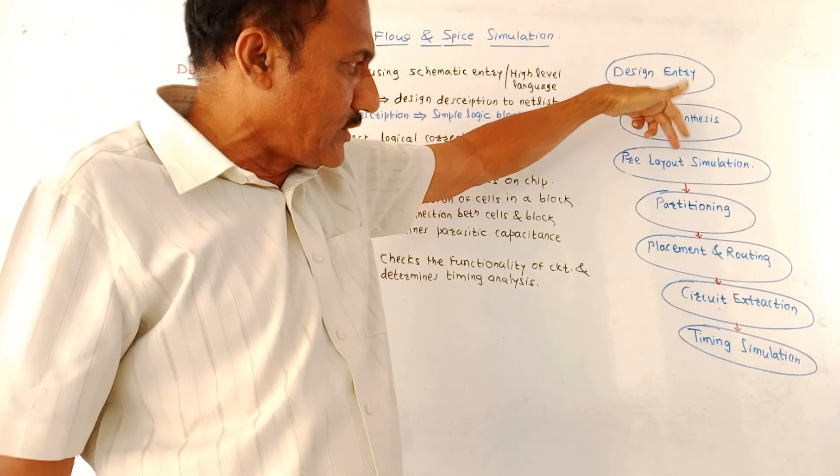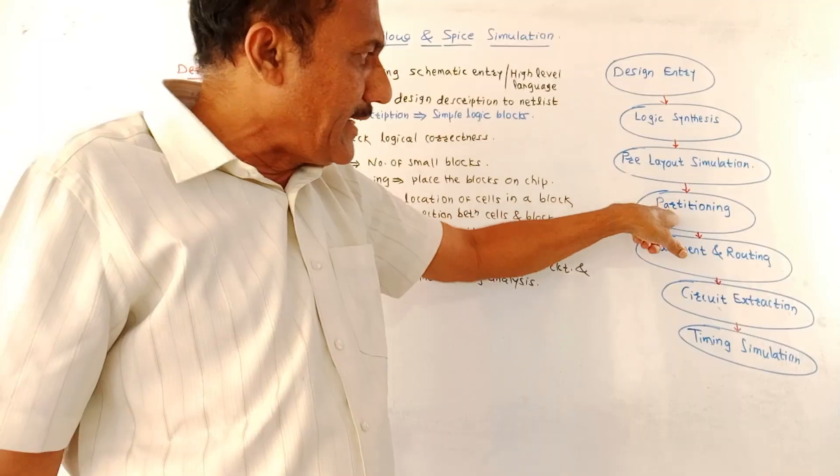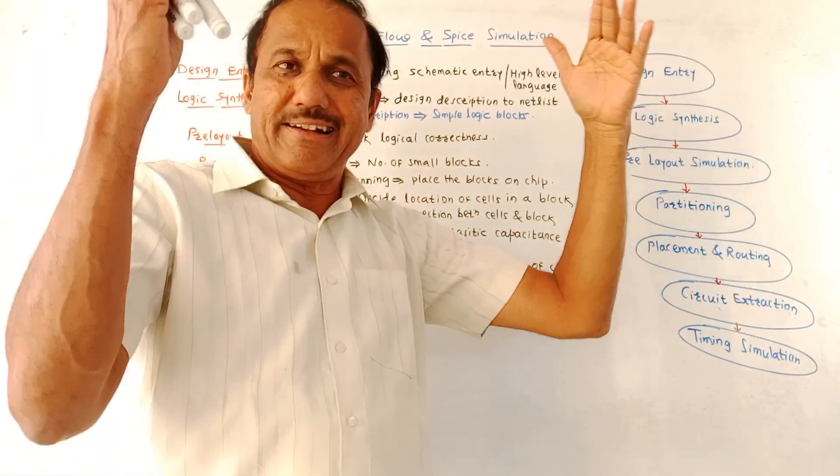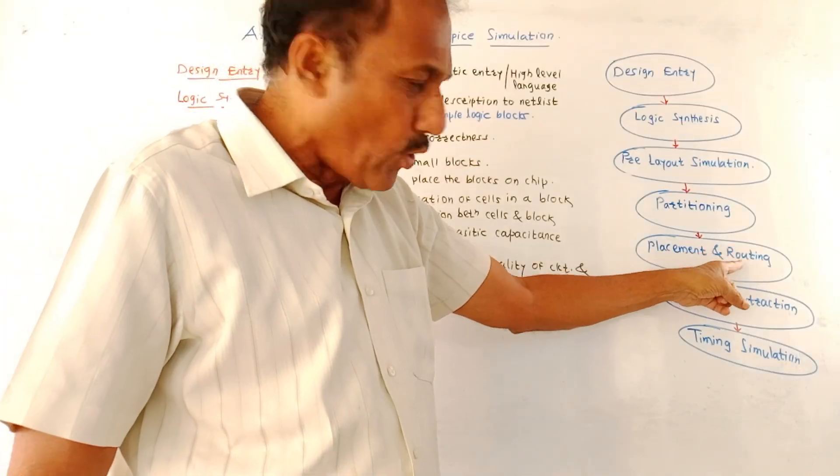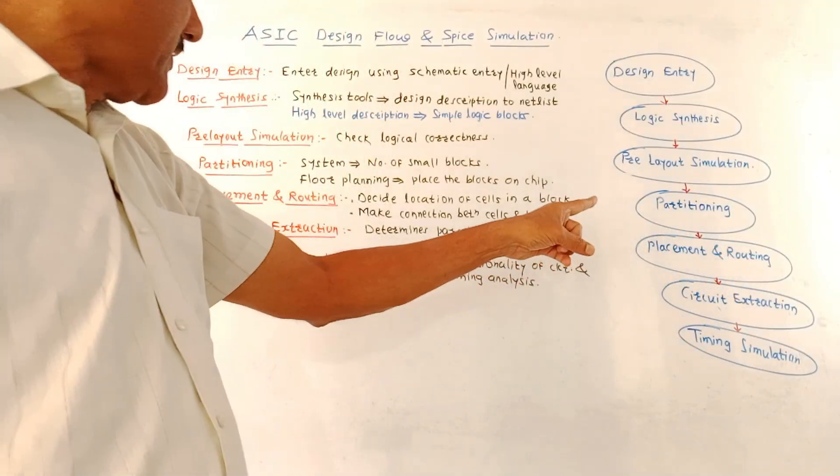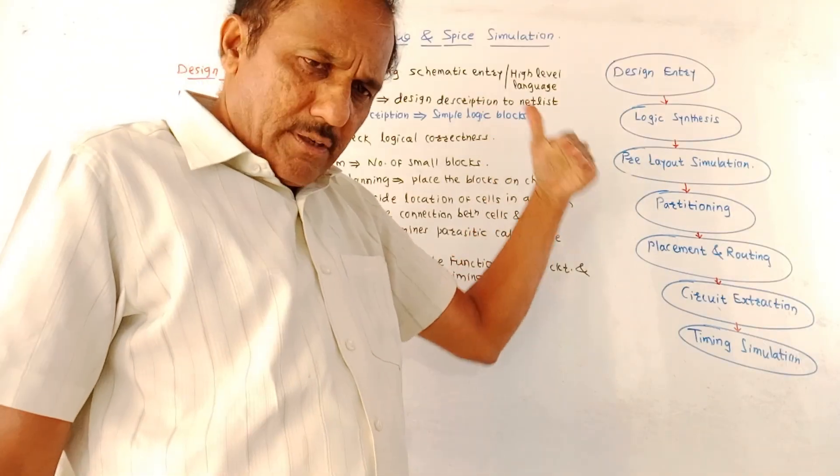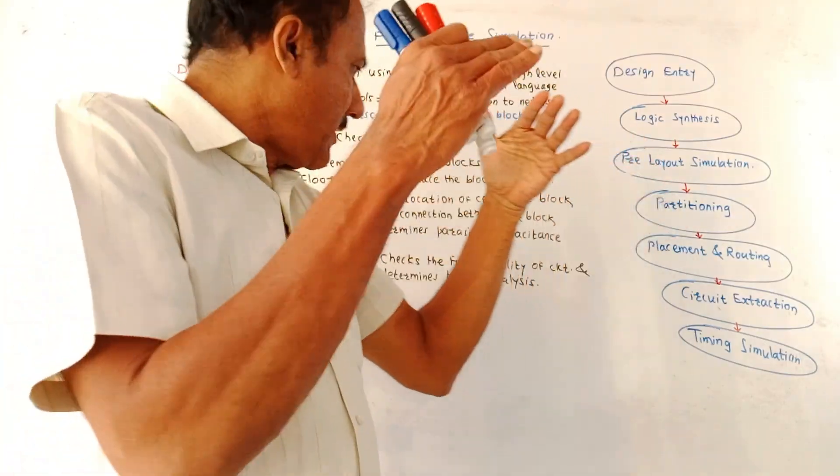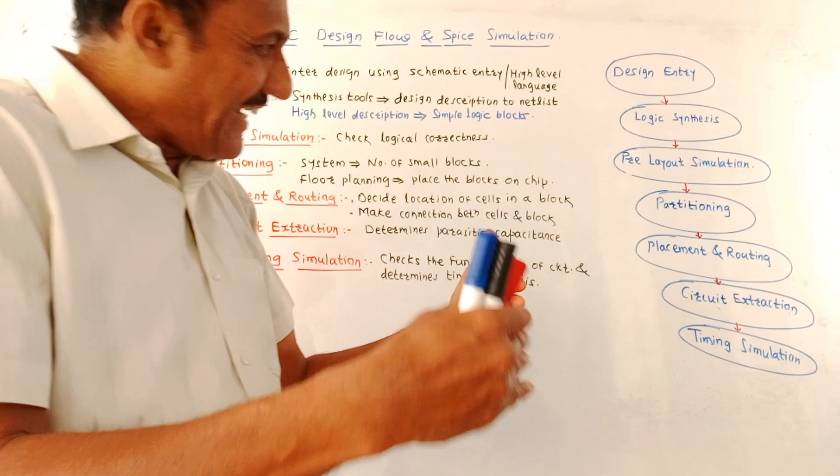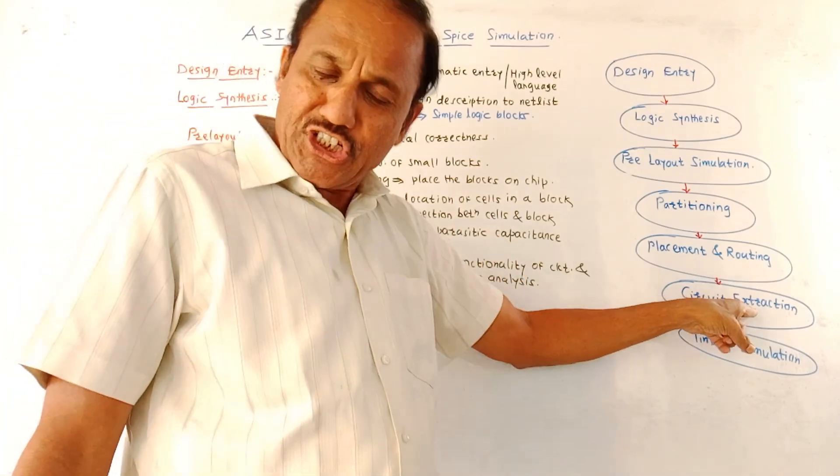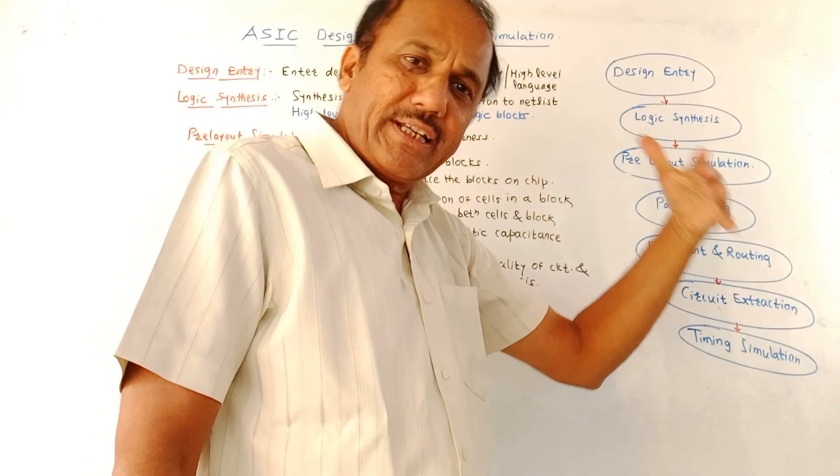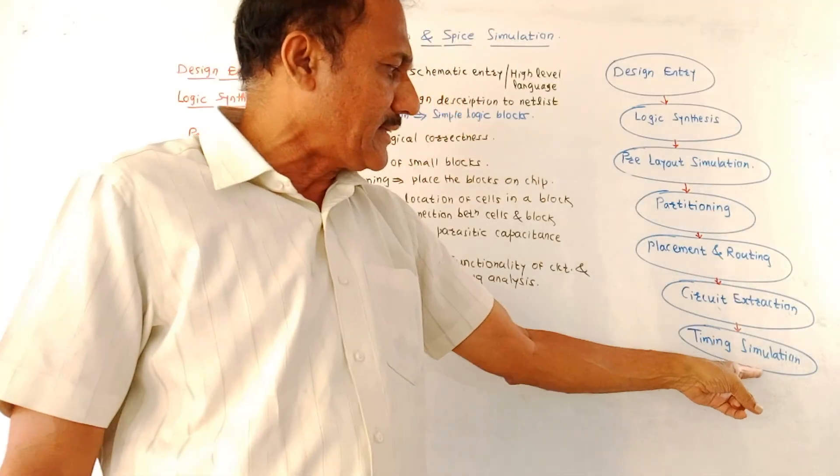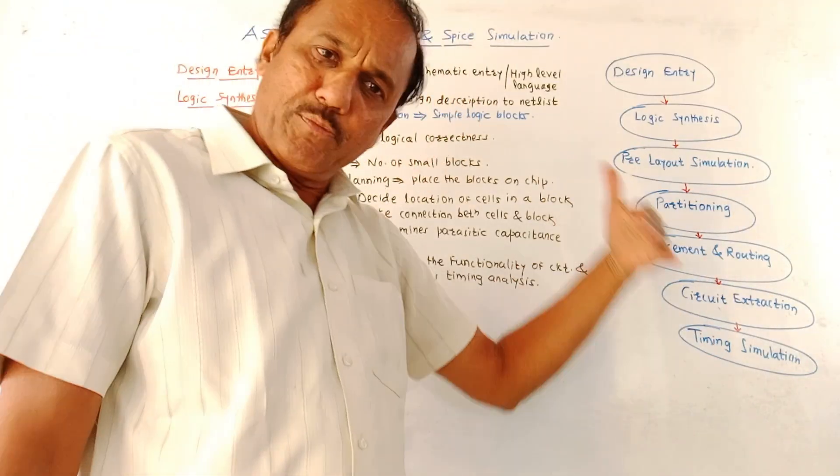Then pre-layout simulation is used for the logical corrections. Then partitioning is done, that means the entire system is divided into number of smaller blocks. Then placement and routing is done, where the location of the cell in a block is decided. Then circuit extraction where the extraction of the parasitic components takes place.